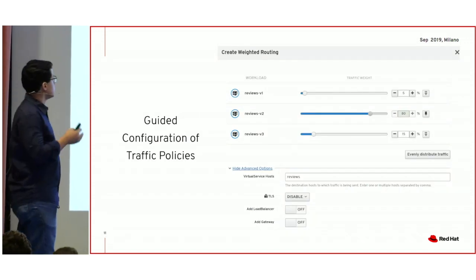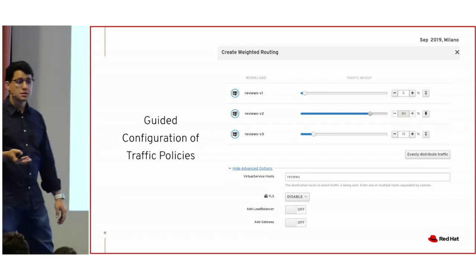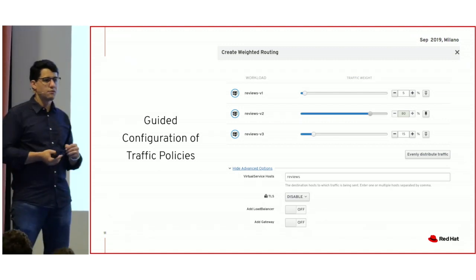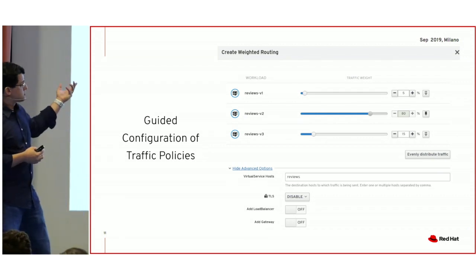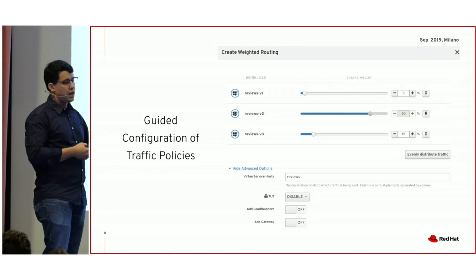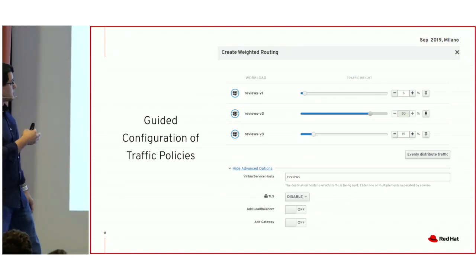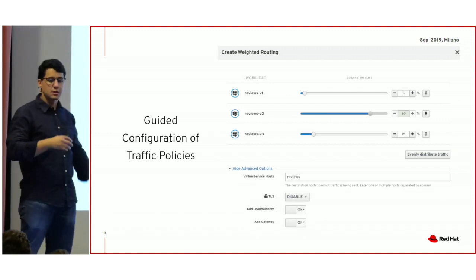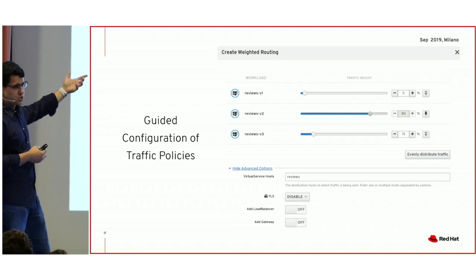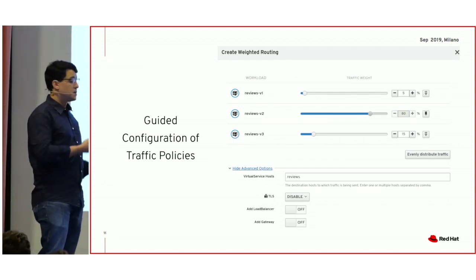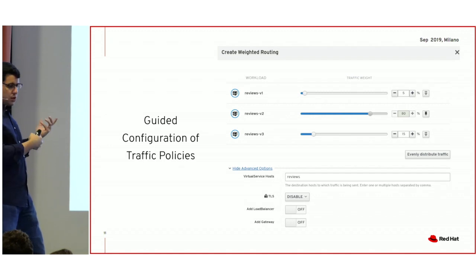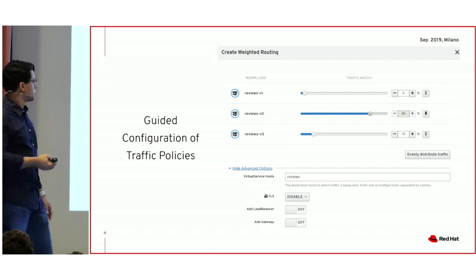Another very interesting feature is the configuration of traffic using weights. It's common to do traffic balancing using headers, round robin, or something like that. Here you can specify weights: for example, V2 is the most stable version, so I want to send 80% of the traffic there. I'm still keeping a very old version around for a legacy application that needs it, while a new version is already receiving 15% of the traffic. This is configuration you do in Kiali or by applying a YAML — and you don't have to change your source code to roll out this change.